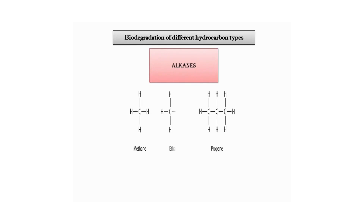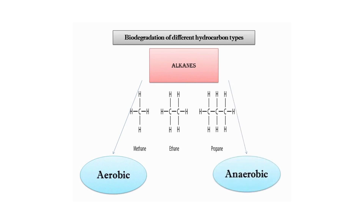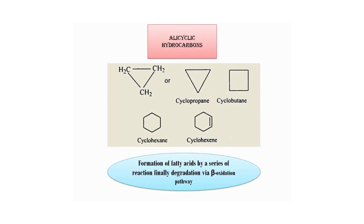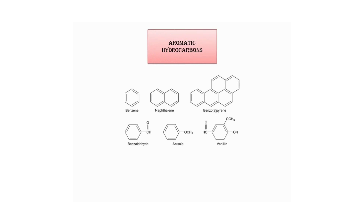Now, coming to the biodegradation of different types of hydrocarbons: alkanes such as methane, ethane, and propane can be degraded aerobically or anaerobically. Degradation of alicyclic hydrocarbons like cyclopropane, cyclobutane, and cyclohexane can occur via formation of fatty acids through a series of reactions, finally degrading via the beta-oxidation pathway. Aromatic hydrocarbons such as benzene, naphthalene, benzopyrene, benzaldehyde, anisole, and vanillin can be degraded by the ortho cleavage pathway or the meta cleavage pathway.